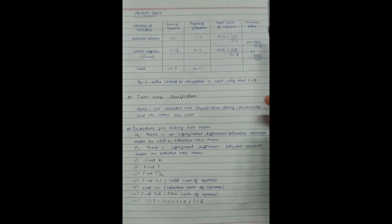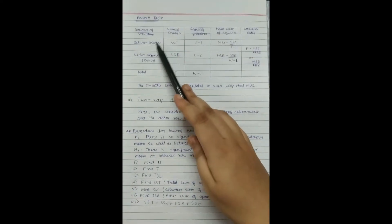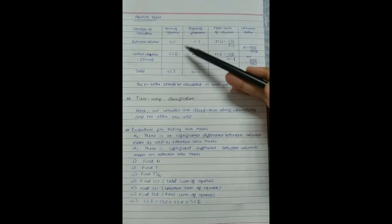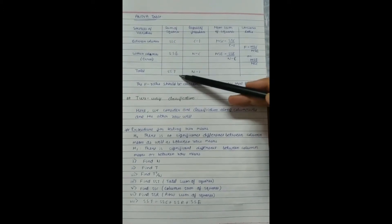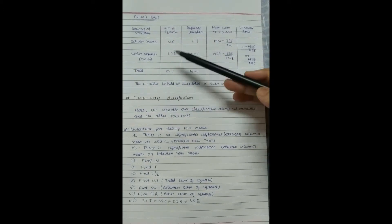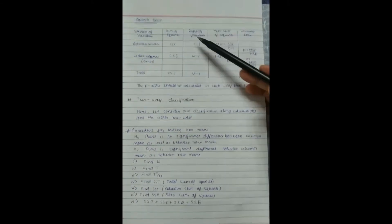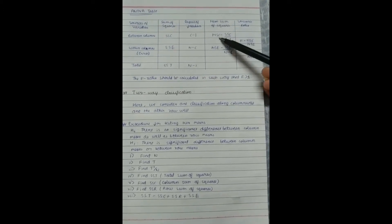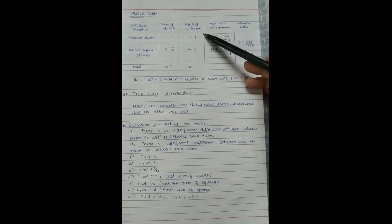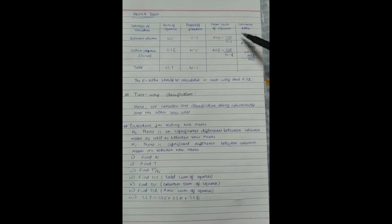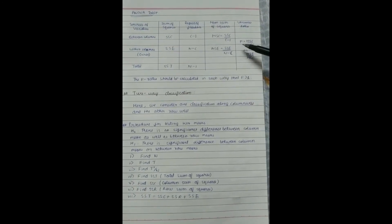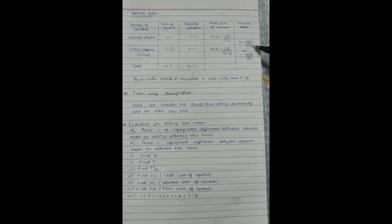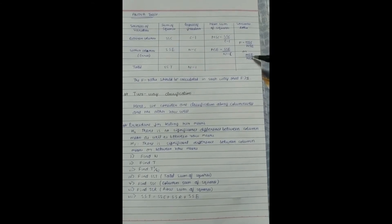In the ANOVA table the sources of variation are between columns and within columns (error). The columns in the table are: sum of squares (SSC and SSE), degrees of freedom (c-1, n-c, and n-1), mean sum of squares (MSC and MSE), and the variance ratio F. We calculate F = MSC/MSE, and it must always be greater than 1. If F = MSC/MSE is not greater than 1, we take the inverse, that is MSE/MSC.